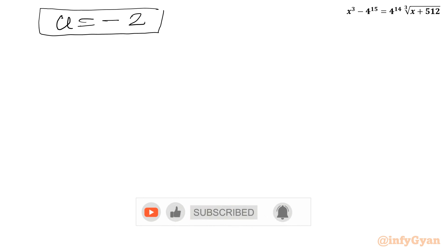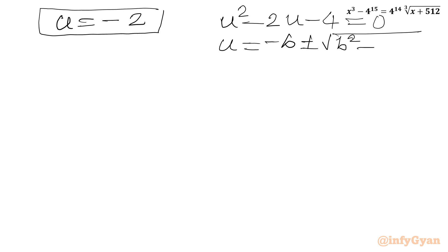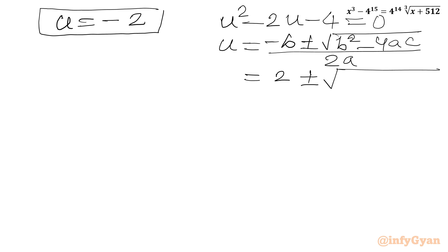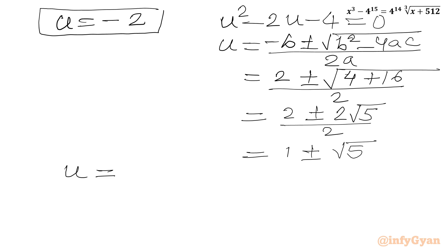From the second factor, u square minus 2u minus 4 equals 0. Using the quadratic formula with a equals 1, b equals negative 2, c equals negative 4: u equals 2 plus or minus square root of 4 plus 16, all over 2, which gives 2 plus or minus root 20, and root 20 equals 2 root 5. So u equals 1 plus or minus root 5. There are therefore 3 values of u: negative 2 and 1 plus or minus root 5.